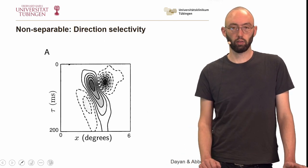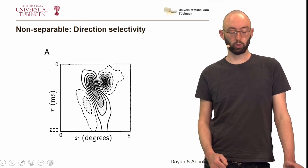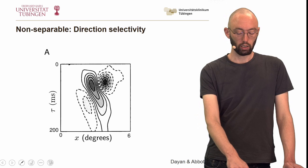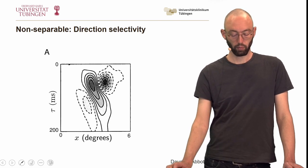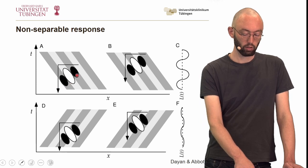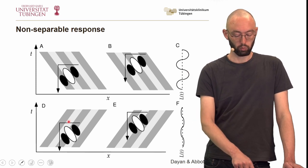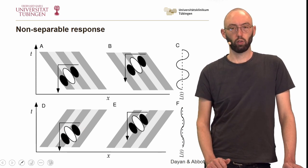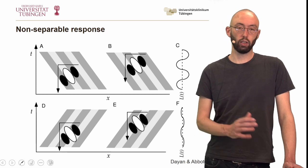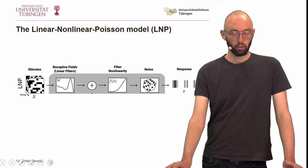How can we find direction selectivity? To make a receptive field direction selective we actually need a non-separable receptive field. In the space-time diagram of the receptive field we need a tilted axis. If we have such a non-separable space-time receptive field, in one direction the alignment is large resulting in a high response, while if the movement goes in the opposite direction there is almost no response. For direction selectivity we need a non-space-time-separable receptive field.